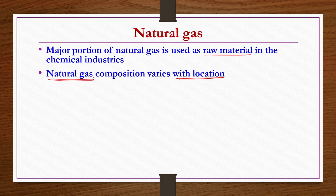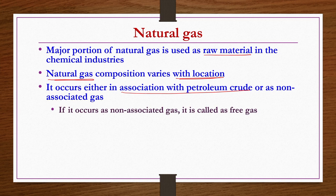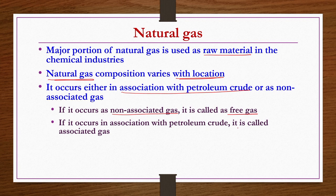Before using natural gas for the required heating purpose, you have to dry it properly, remove any heavy end products, and remove H2S to purify it as much as possible. Natural gas occurs either in association with petroleum crude or as non-associated gas. If it occurs as non-associated gas, it is called free gas. If it occurs in association with petroleum crude, it is called associated gas. From natural gas wells you get free gas; from petroleum crude wells you get associated gas.